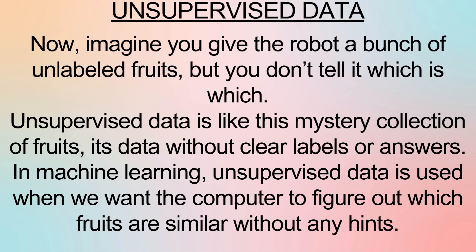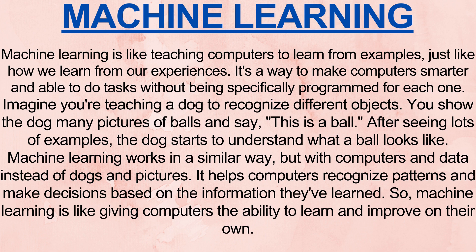Now, imagine you give the robot a bunch of unlabeled fruits, but you don't tell it which is which. Unsupervised data is like this mystery collection of fruits — it's data without clear labels or answers. In machine learning, unsupervised data is used when we want the computer to find patterns or group similar things together on its own. It's like asking the computer to figure out which fruits are similar without any hints.